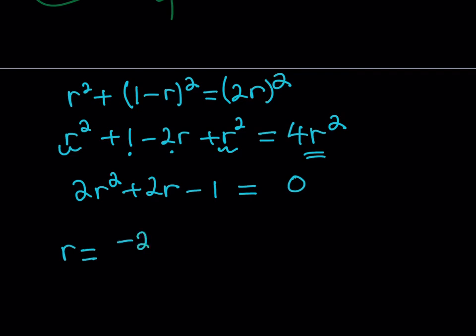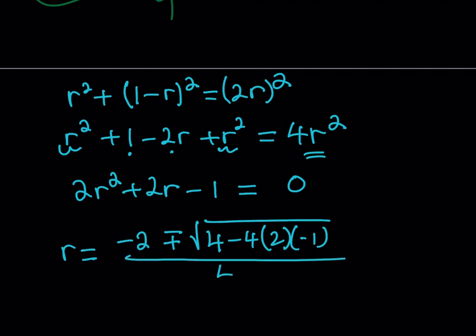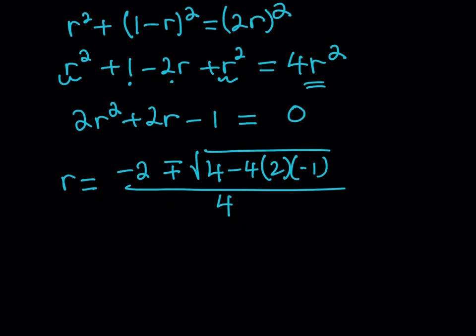Negative b plus minus the square root of b squared which is 4 minus 4 times a times c. C is negative 1 so the product here is going to be a negative product because of the minus sign it is going to turn into a plus sign. So we're going to be adding 4 plus 8 which is 12.